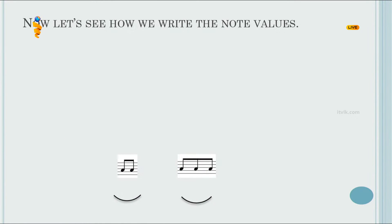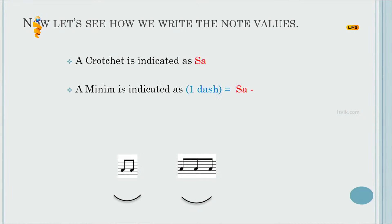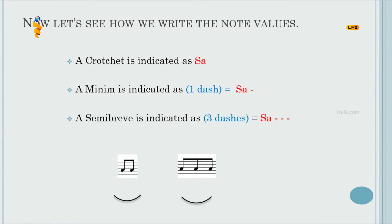Now let's see how we write the note values. A crotchet is indicated as Sa. A minim is indicated as one dash with a note. A semibreve is indicated as three dashes with a note. Quaver notes are grouped — two quavers are Sa Sa with a slur, and three quavers are Sa Sa Sa with a slur.